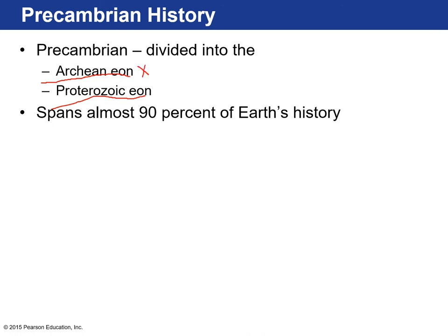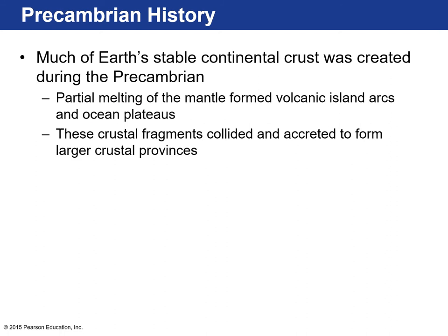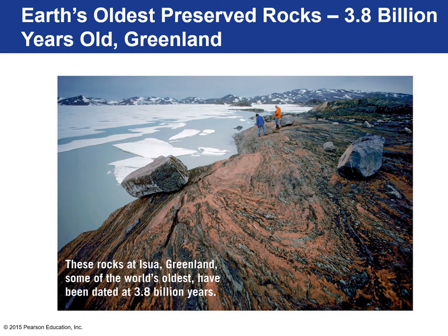The Precambrian can be divided into the Archean and the Proterozoic. In the Archean, during the Hadean time, there was bombardment from planetesimals, magmatic oceans, and so forth. During the Precambrian, much of the stable continental crust was created — partial melting of the mantle formed the initial volcanic island arcs and ocean plateaus. Because of active plate tectonics, they moved, collided, and accreted to one another, creating the very first continental crust. Continental fragments did subduct, but once they thickened enough, they were able to float and stay on the surface, forming the very first cratons.